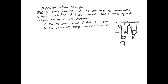In this problem we are going to do an example of dependent motion. You can see the drawing here. Block A starts from rest at time t equals 0 and moves downward with a constant acceleration of 6 inches per second squared. Block B moves up with a constant velocity of 3 inches per second. Determine when the velocity of block C is 0 and the corresponding change of position of block C.